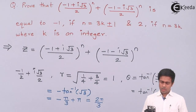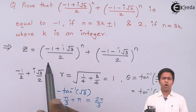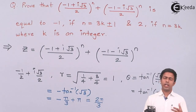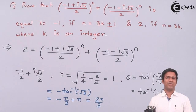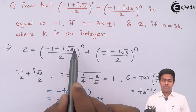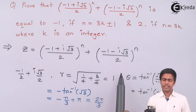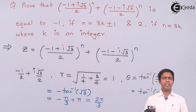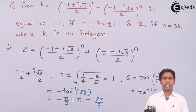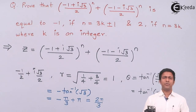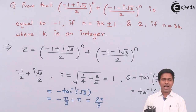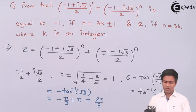For the second number, notice it is the complex conjugate of the first — the imaginary part is negative while the real part is the same. For a complex conjugate, r and |θ| remain the same; only the sign of the imaginary part changes. So the second number has r = 1 and θ = -2π/3.